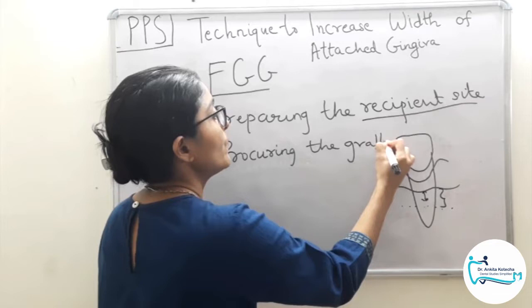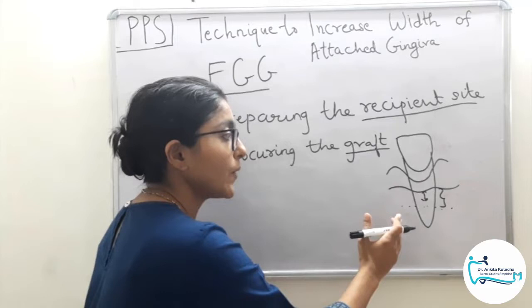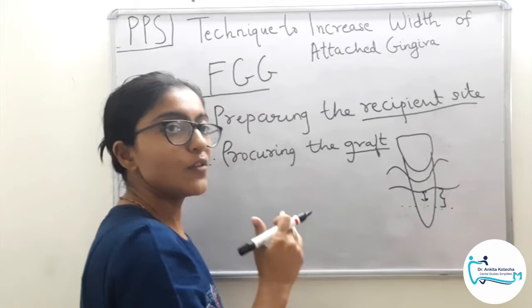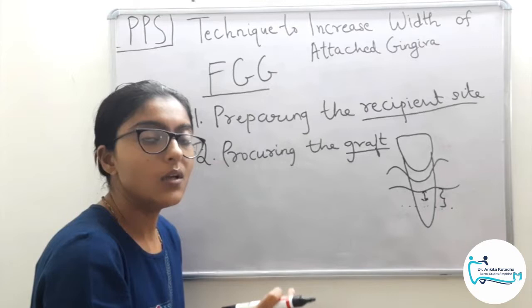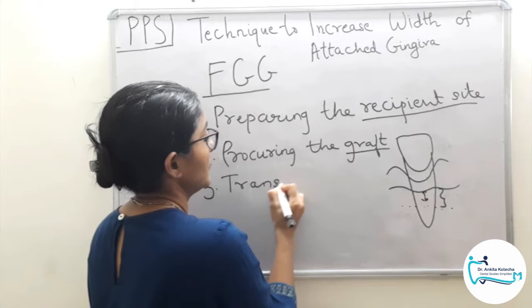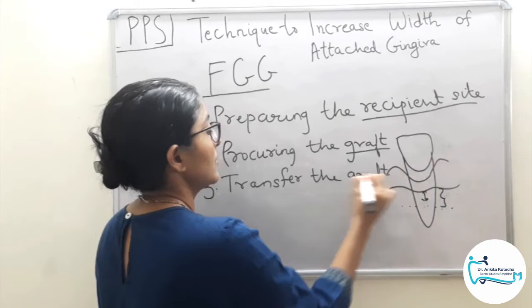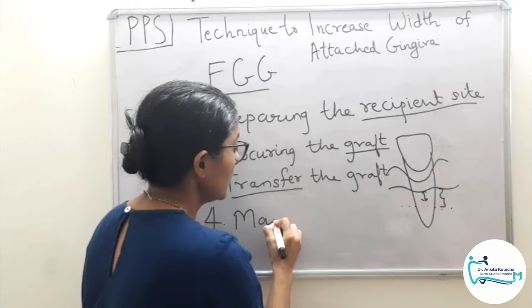The second step is procurement of the graft. It cannot be arbitrary dimensions or method — it must be measured adequately in terms of dimensions and shape. The measurement of the recipient bed is taken on a sterile aluminium foil, transferred onto the donor site, and the graft is procured. Next, we transfer the graft onto the prepared recipient bed and fix it with sutures. The final step is managing the open wound on the donor site.